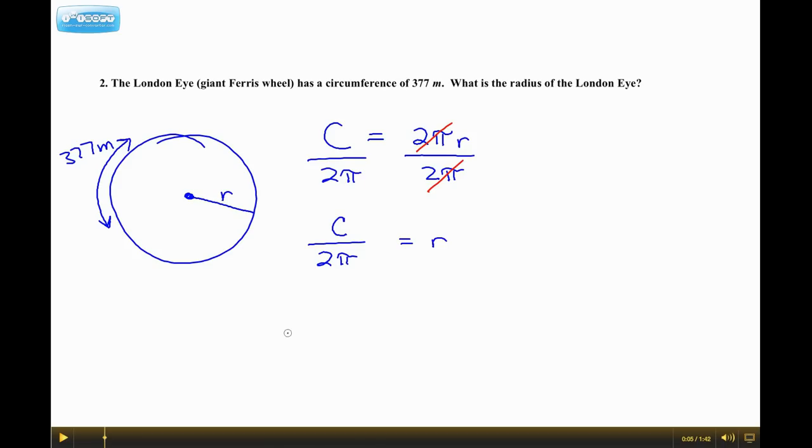So we replace C with 377 meters divided by 2 pi. And the number for pi, I'm not going to use 3.14. I'm going to use the number that is already built into my calculator. So check to see where your pi button is. And we'll give an approximate answer this time.